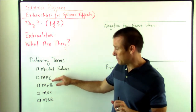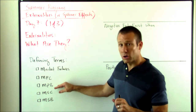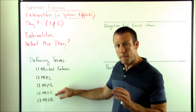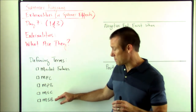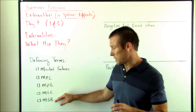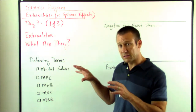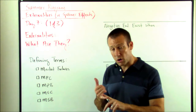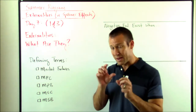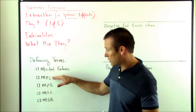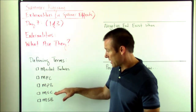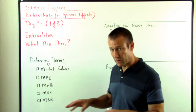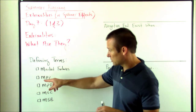We've got some new terms: Marginal Private Cost (MPC), Marginal Private Benefit (MPB), Marginal Social Cost (MSC), and Marginal Social Benefit (MSB). Up until this point, we've just talked about marginal cost and marginal benefit, but now it's important that we split out between private cost and social cost, and private benefit and social benefit.